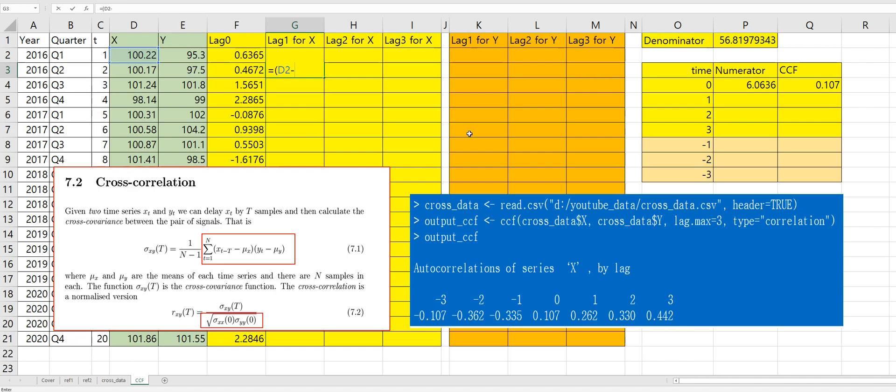X minus average of X times... sorry. We need to change it. E3... and... E2... minus average of Y variable.